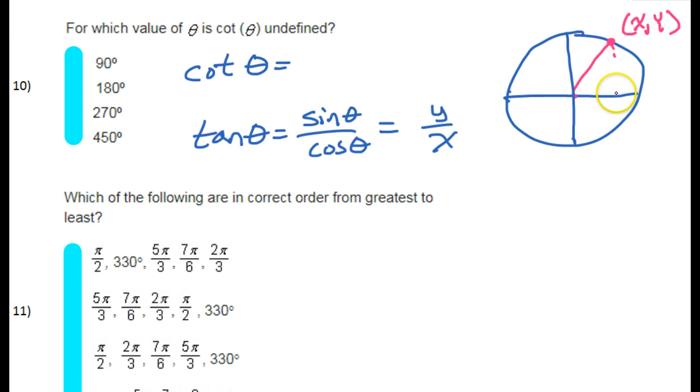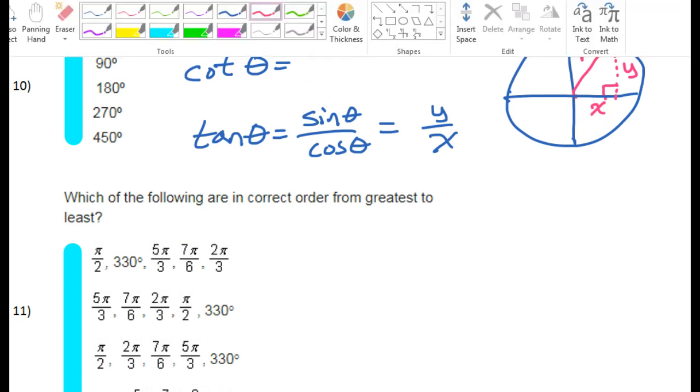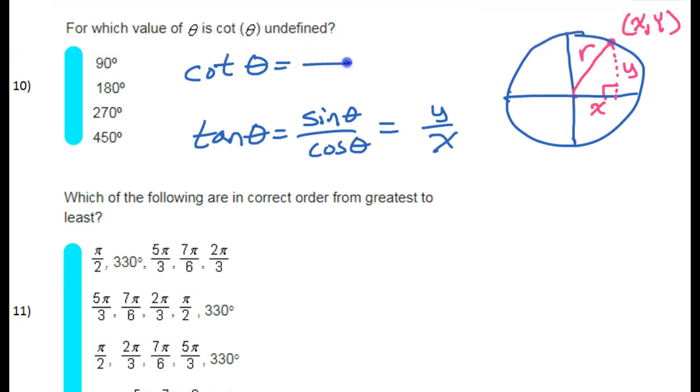If you make a triangle out of that, then this will be x and this will be y. And there's also this r value representing the radius. But tangent is always y over x. So cotangent is the reciprocal of that. So cotangent will be x over y.